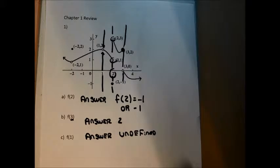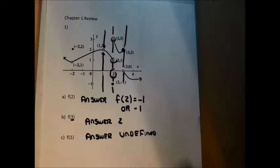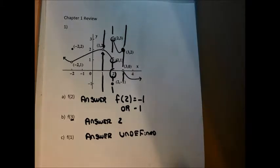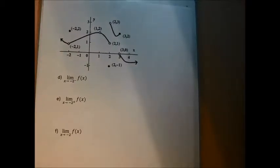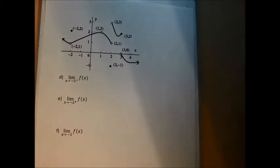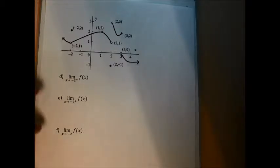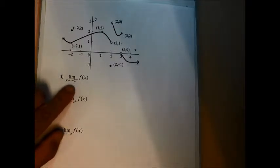When there isn't a point with a closed circle for a specific value of x, the function just doesn't exist for that value — it's undefined there. That covers parts A, B, and C, but we're not done with problem 1 because it also has limits. Parts D, E, and F want me to find a left-hand limit, a right-hand limit, and a two-sided limit, all related to x = -2.